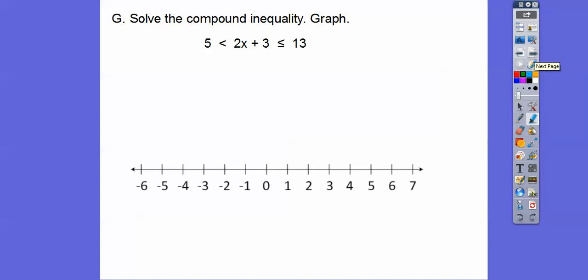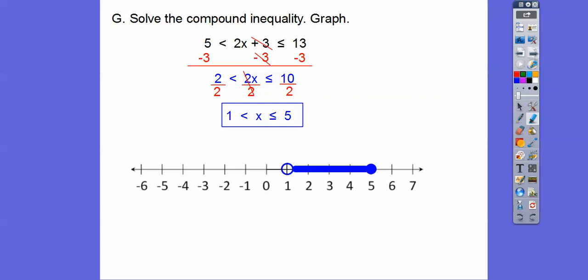So let's solve this compound inequality. Here we've got to go minus 3, minus 3, and then minus 3 over there. And then we're going to graph it. Now we've got to divide everything by this 2. So divide by 2, divide by 2, divide by 2. And when we do that, we get that. Now this is not equal, so we're going to have an open circle on 1, and it's going to be a closed circle on positive 5, and we're going to shade in between the 2 right there.